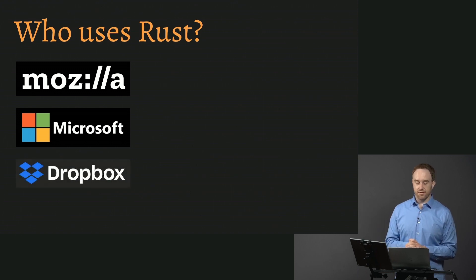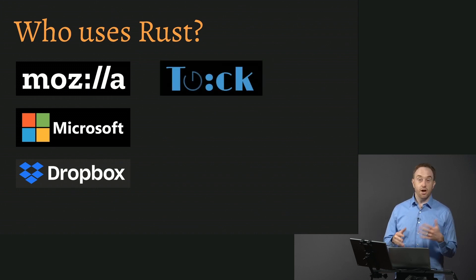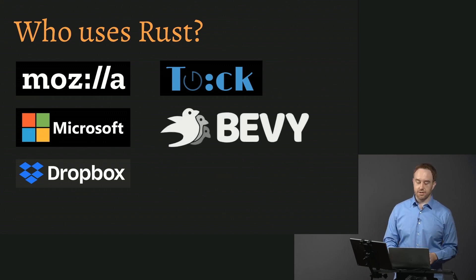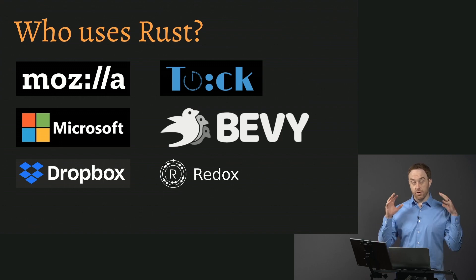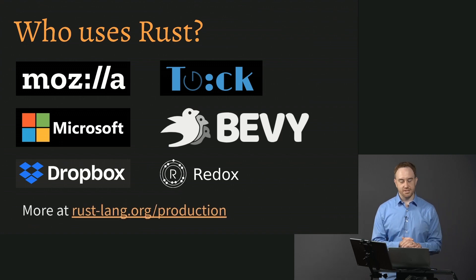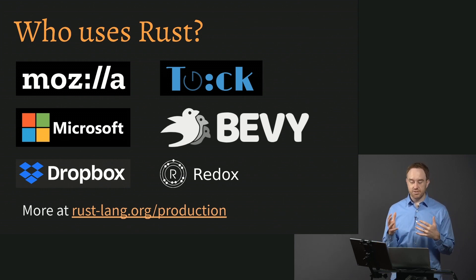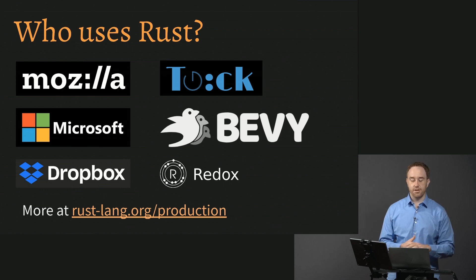Dropbox has been using Rust to improve performance on some of their syncing work. There are also lesser-known organizations: Tock, for example, is using Rust to make an embedded systems operating system. Bevy makes a game engine in Rust. Redox is actually a full-blown desktop operating system written entirely in Rust. You can find more examples on the Rust website — there's a lot of diversity in how Rust is used, by really big companies, small companies, and organizations that aren't companies.